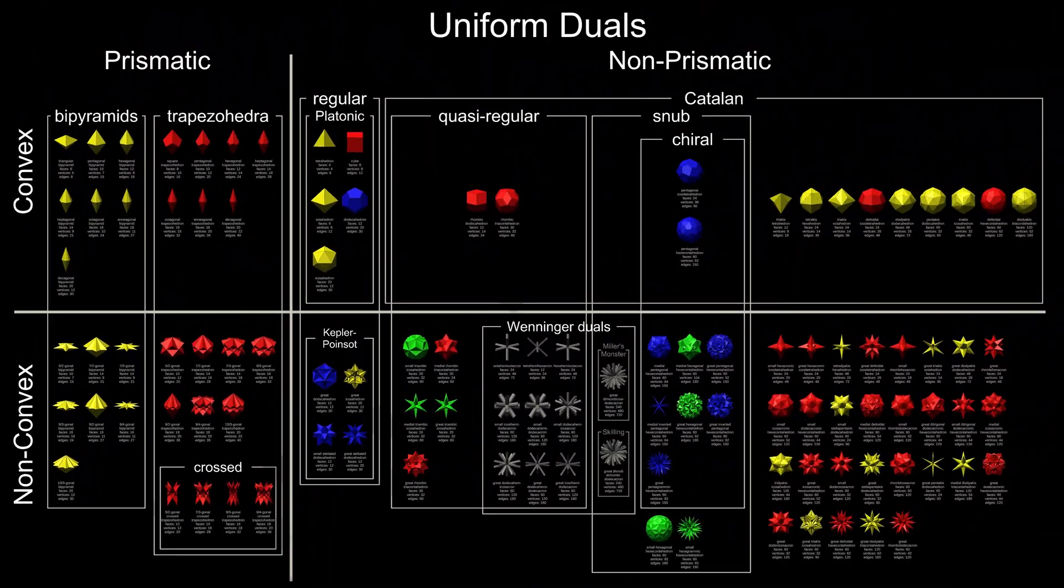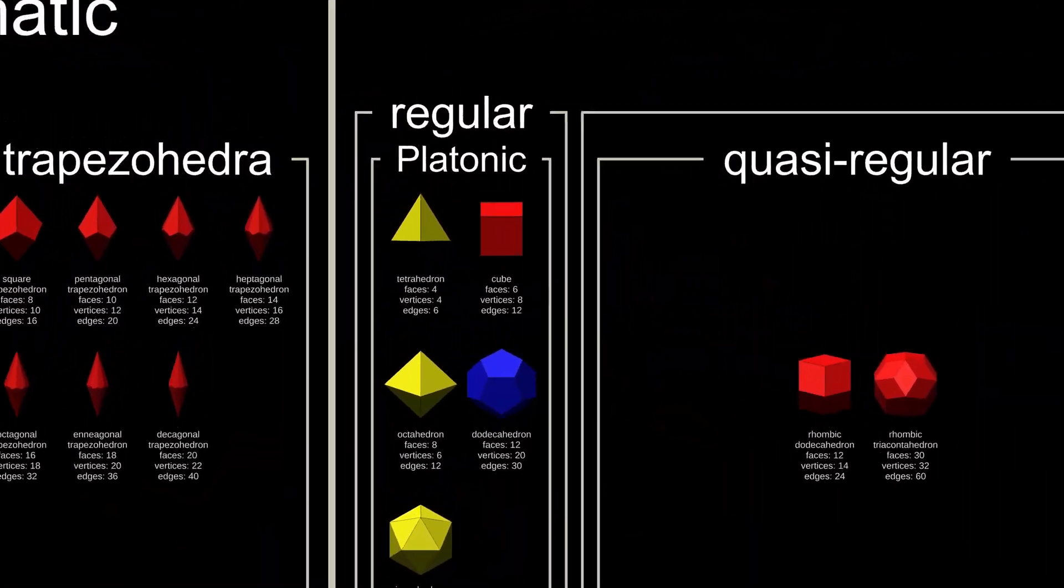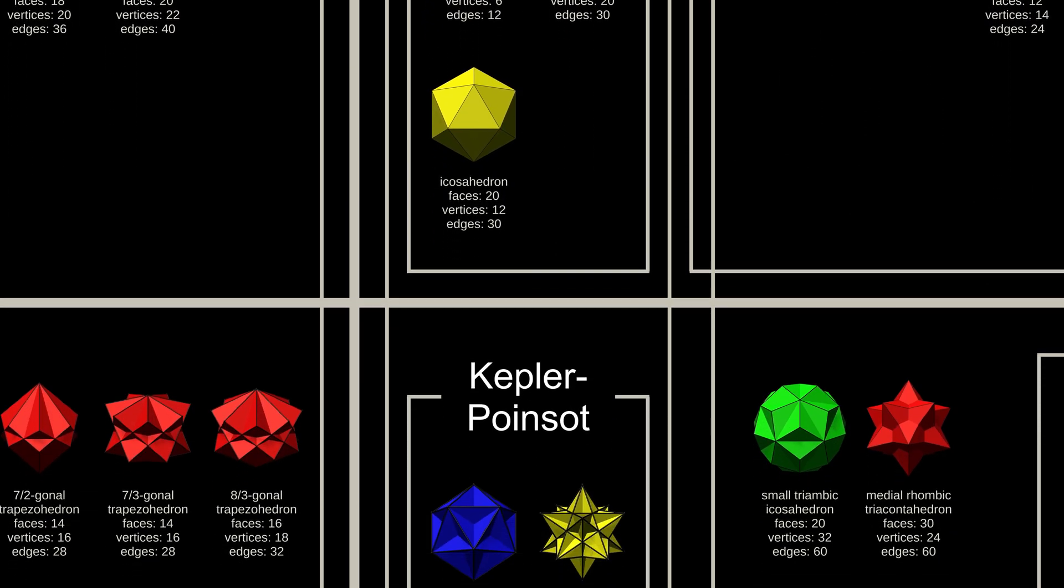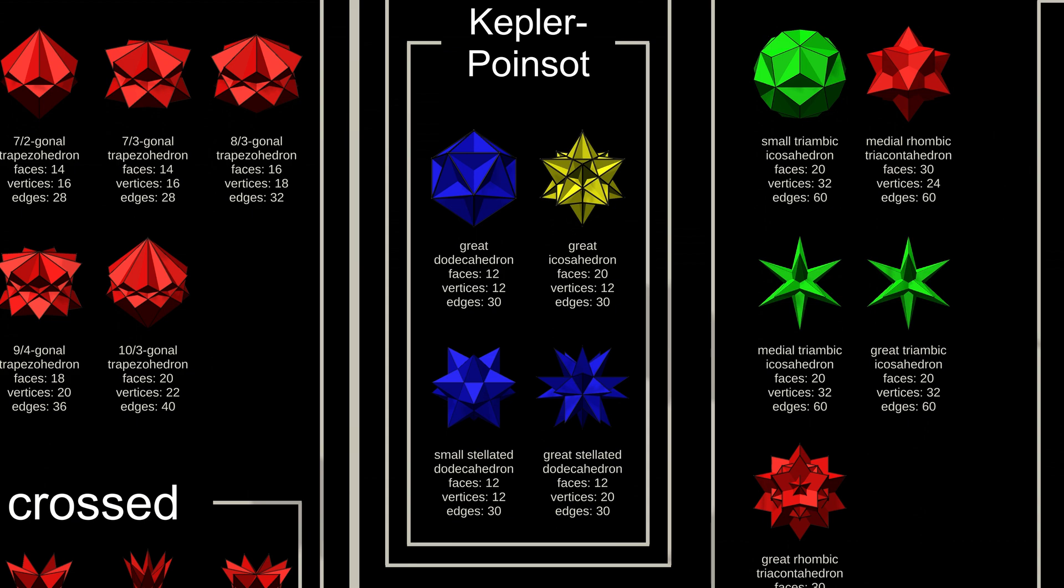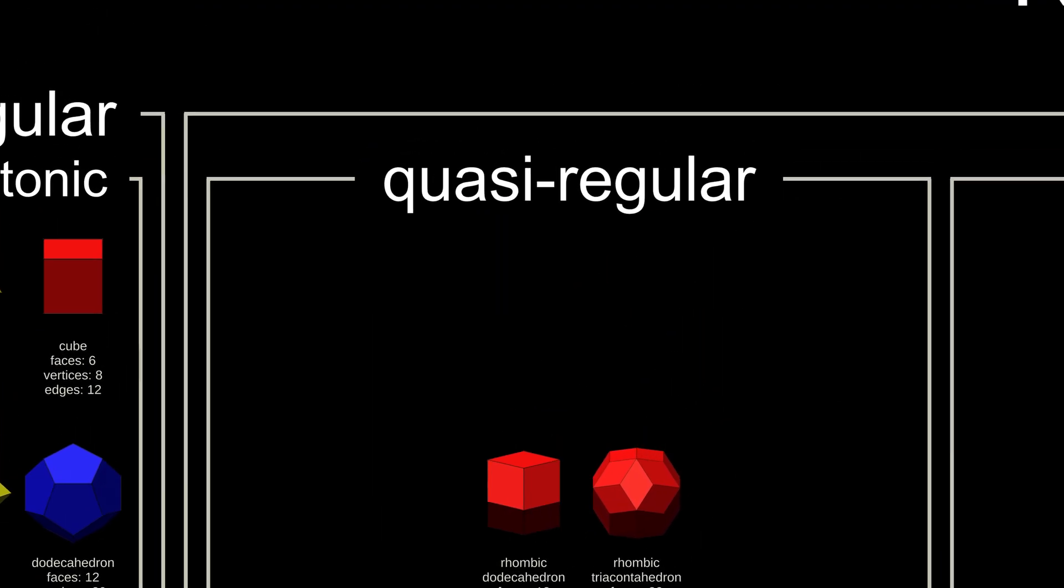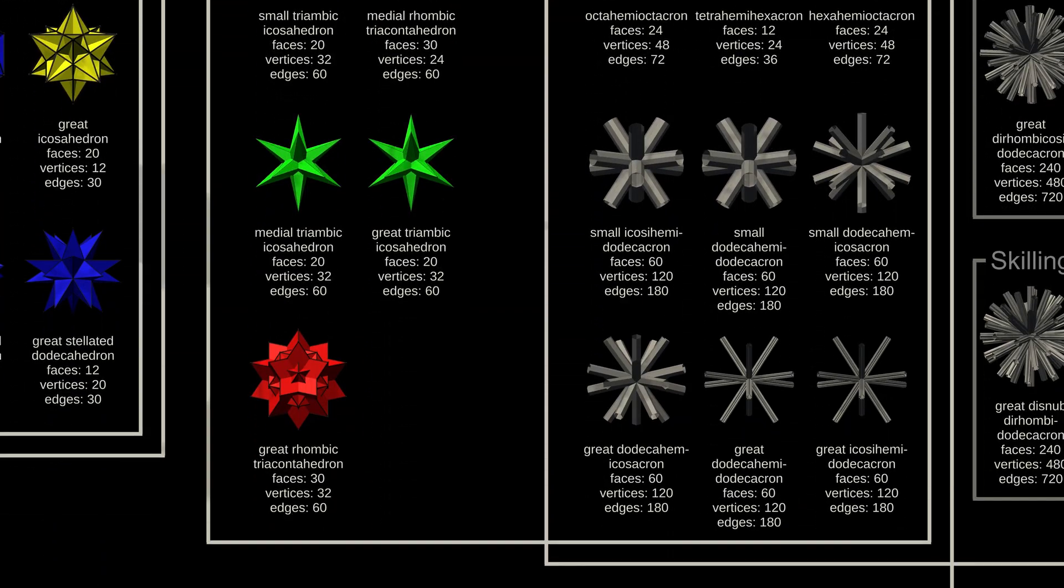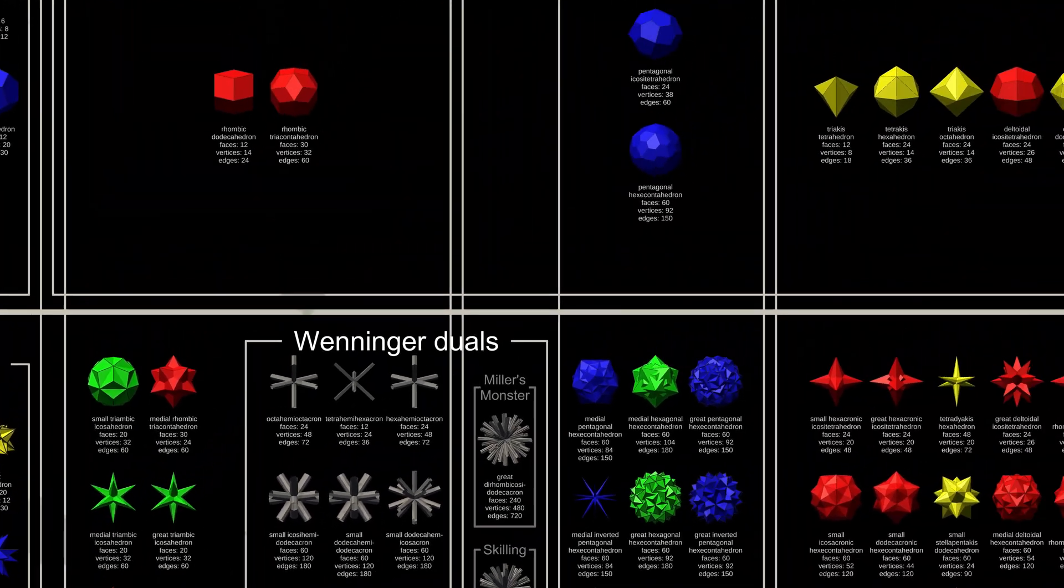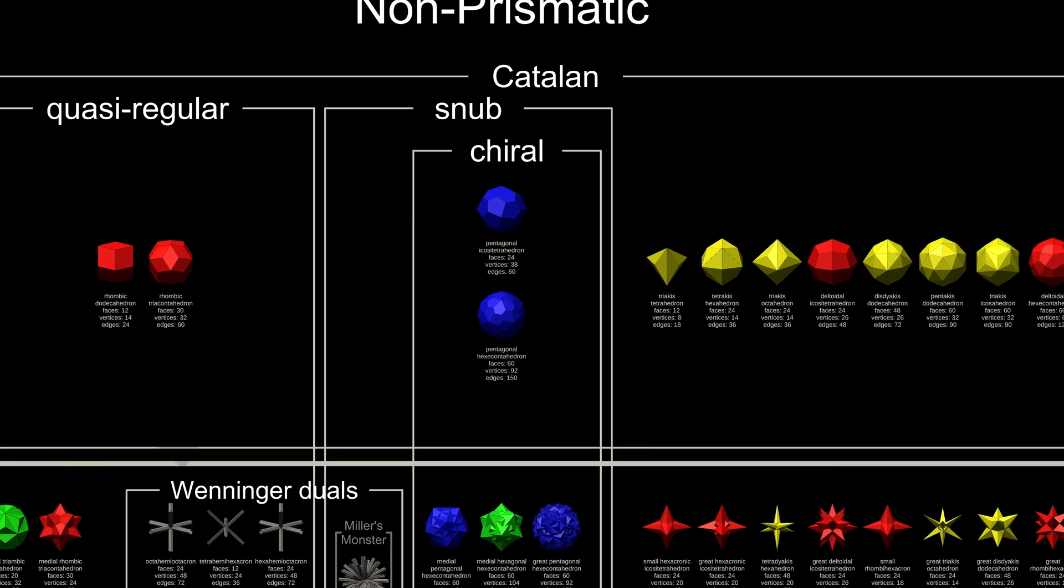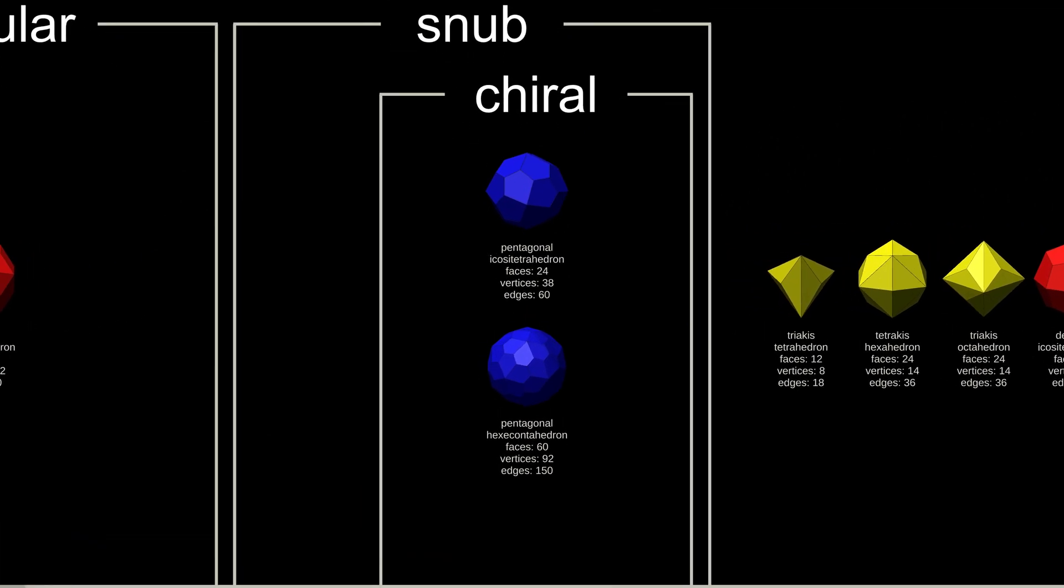The duals of each regular polyhedron is another regular polyhedron, so this section as a whole remains the same. The quasi-regular duals have identical edges as well as identical faces. The Catalan solids are the duals of the Archimedean solids. The dual snubs are chiral if the corresponding uniform polyhedron is chiral.